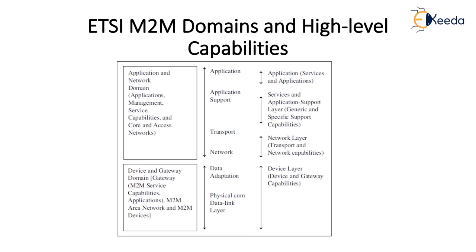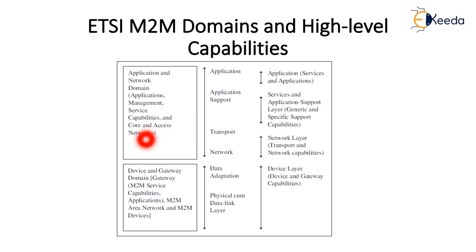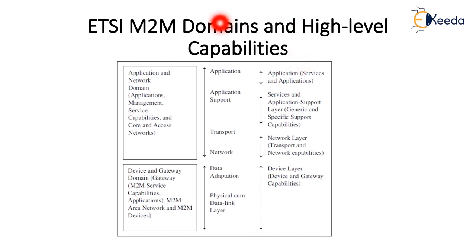The ETSI device and gateway domain has functional units for gateways between M2M devices and area networks, core and access networks, and for processing M2M services, capabilities, and applications. The M2M area network includes Bluetooth, ZigBee, NFC, PAN (personal area network), and LAN. The device and gateway domain has M2M service capabilities, applications, M2M area networks, and M2M devices. The network domain contains network transport, application support, data management, service capabilities, and core and access area networks.